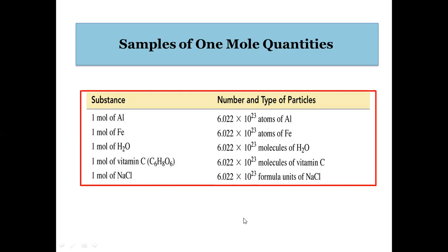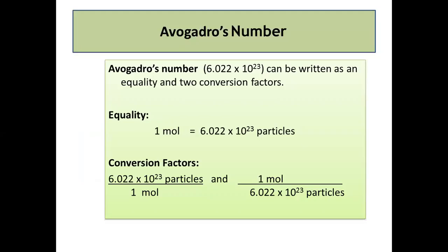The number is always the same — it is not going to change. One mole is always equivalent to Avogadro's number of particles, which is 6.022 × 10²³ atoms, ions, or molecules. This can be represented in equality and conversion factors: one mole equals 6.022 × 10²³ particles, and the conversion factors are Avogadro's number divided by one mole, or one mole divided by Avogadro's number.